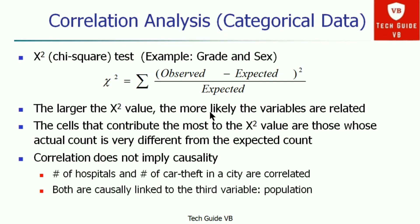For categorical data, a chi-square test is carried out for correlation analysis. The formula is: summation of (observed minus expected) squared, divided by expected. The larger the chi-square value, the more likely the variables are related. The cells that contribute most to the chi-square value are those where the actual count differs greatly from the expected count. Note that correlation does not imply causality — for example, the number of hospitals and car thefts in a city are correlated, but both are causally linked to a third variable: population.